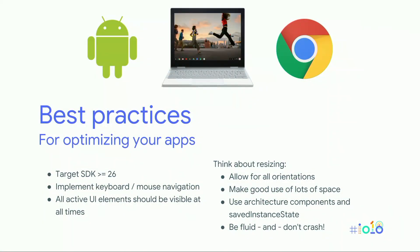Best practices: we're trying to work with the Play Store to surface applications that are really good for the Chrome OS environment. If you do everything we ask for, you will get a better rating. Target SDK 26 or higher. Implement keyboard and mouse navigation. UI elements when resizing should always stay inside the screen. Think about both landscape and portrait orientations when resizing. Make good use of the available space. Use architectural components whenever possible to save your state. Be fluid, and please don't crash — that's really the worst thing that can happen. And with that, I'm passing it on to Emily, who will talk about all the great tools we have for you.